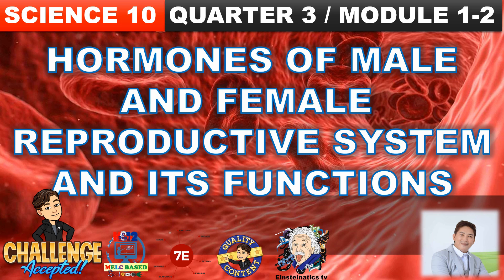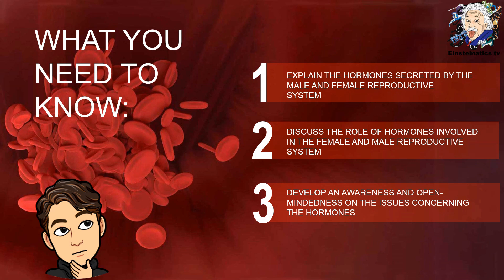Hey everyone, congratulations for making it to the third quarter. First off, we are going to focus on the endocrine system, specifically on the hormones of male and female reproductive system and its functions, which is covered by Module 1 and 2. Here are the specific objectives for this lesson: first, explain the hormones secreted by the male and female reproductive system; discuss the role of hormones involved in the female and male reproductive system; and lastly, develop an awareness and open-mindedness on the issues concerning the hormones.